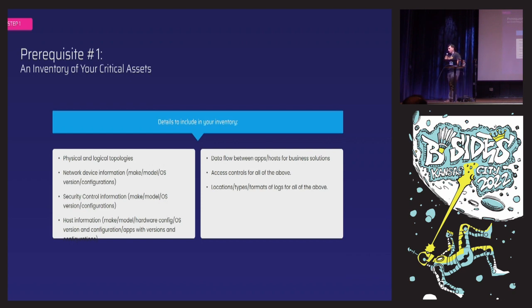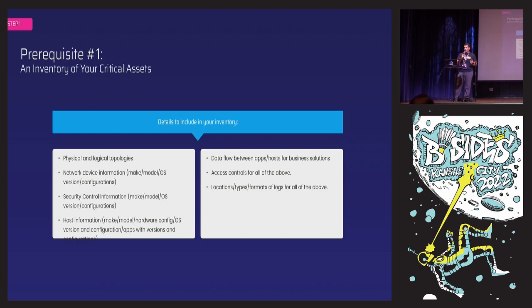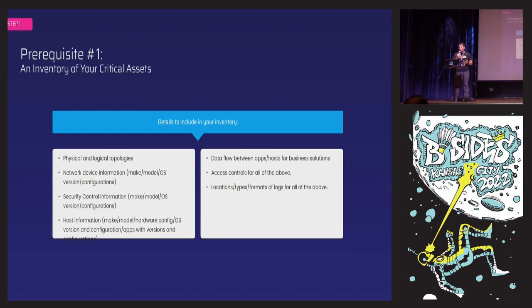When you're inventorying these assets, there are a few things you'll want to note. You definitely want to record your assets' make, model, and OS versions because threat actors are constantly looking for vulnerabilities in the devices and applications you're trying to protect. Understanding all those different details for each of your assets will allow your threat hunting team to focus on specific threats, identify any active exploits targeting those assets, and allow you to better defend them.